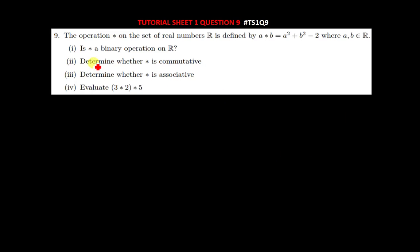The question tells us that the operation star on the set of real numbers R is defined by a star b, which is equal to a squared plus b squared minus 2, where a and b are members of the real numbers.